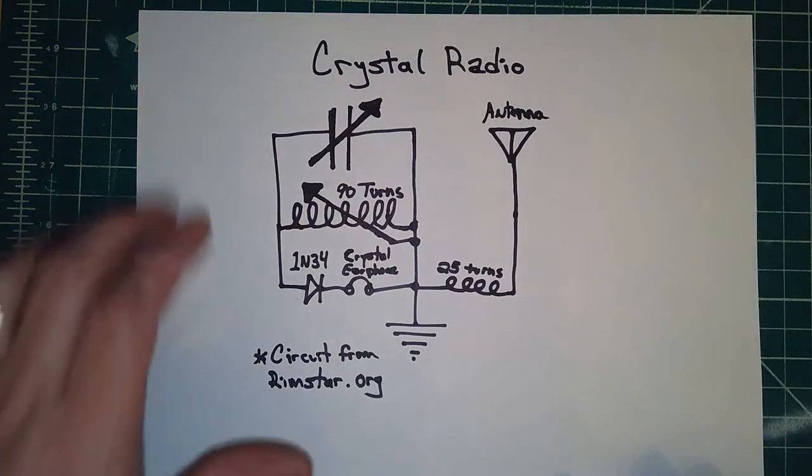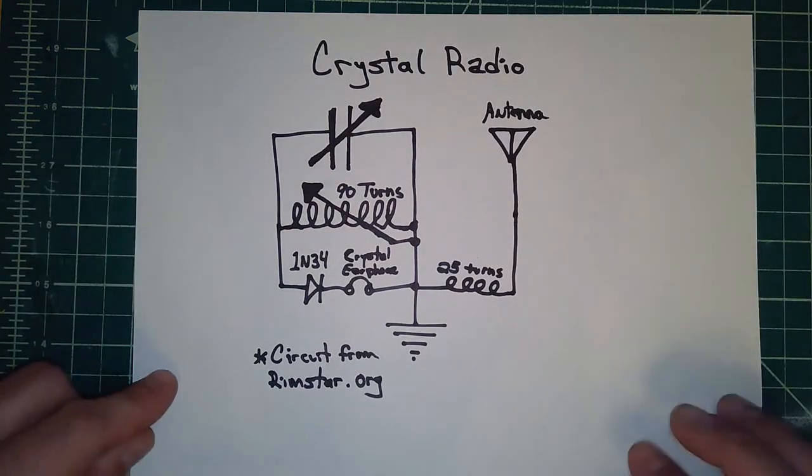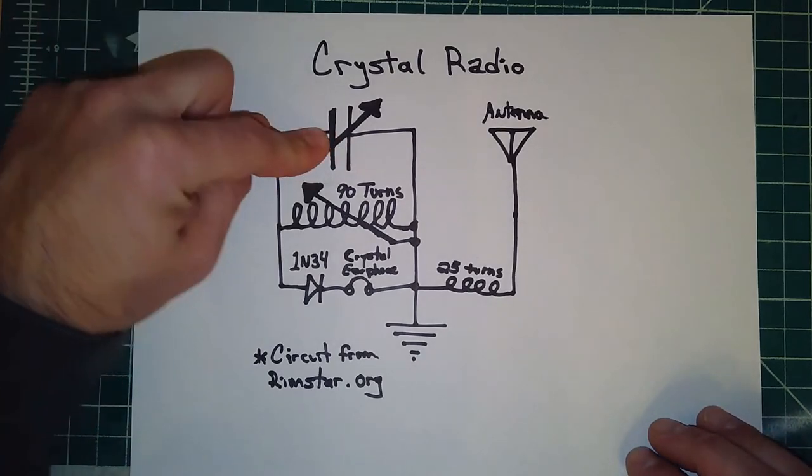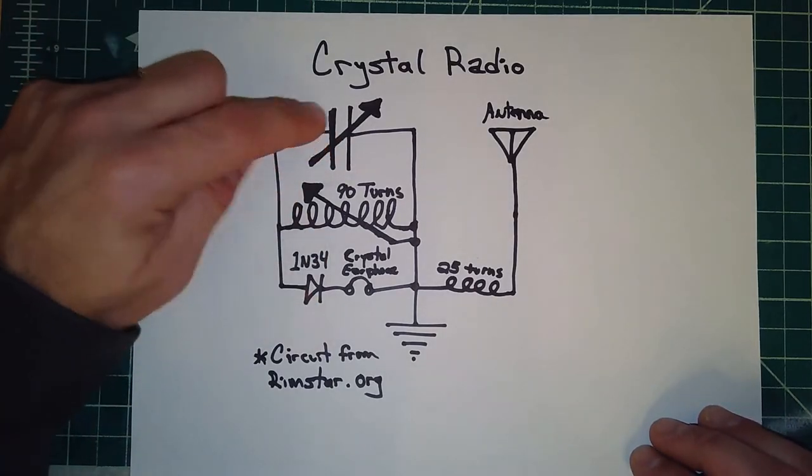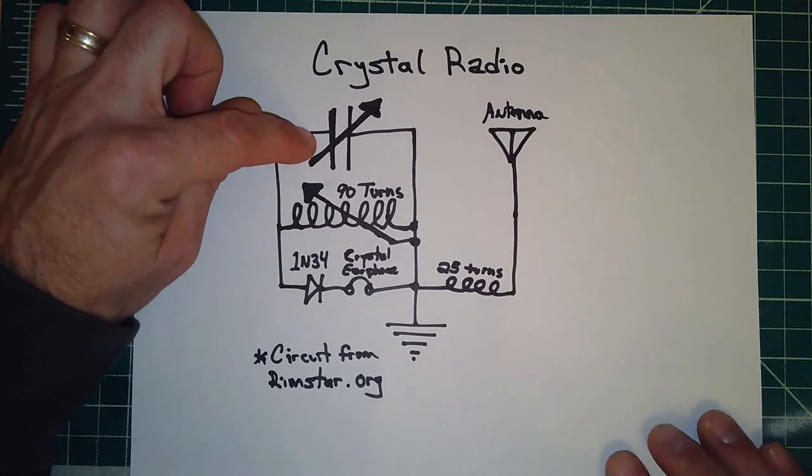All right, here's a schematic diagram for the crystal radio that I'm going to make here. Notice that I have a variable capacitor here. We're going to be making that from scratch using tinfoil and some paper.